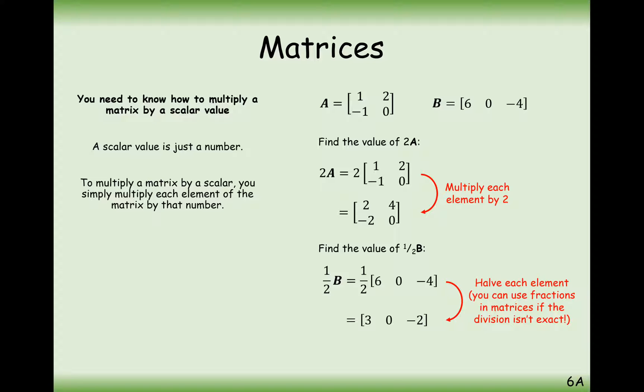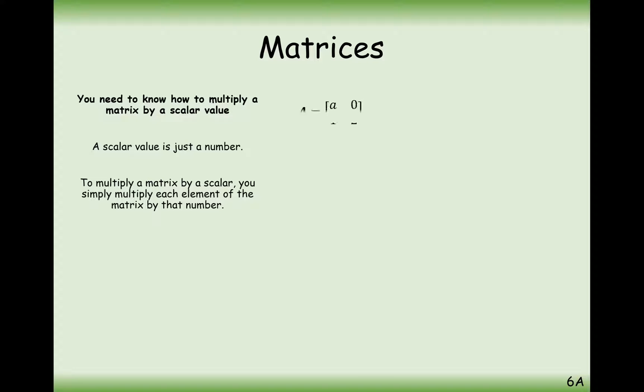Another question might be involving both of these operations of timesing a matrix and working out a missing letter inside a matrix. But notice here how it's A plus 2B equals C, and we've got to find the values of A, B, and C.